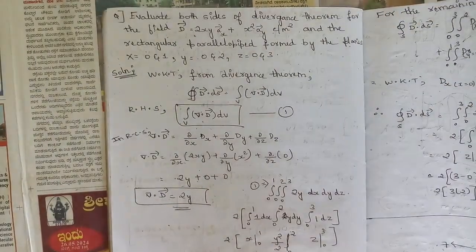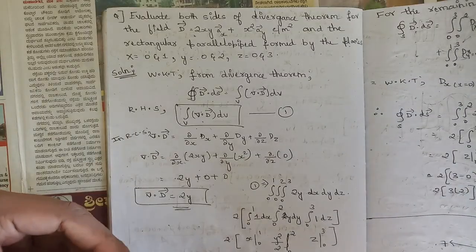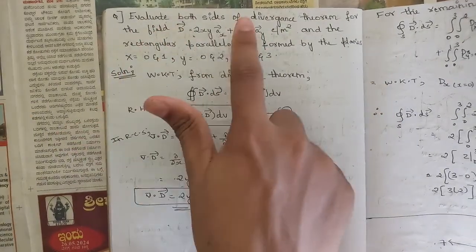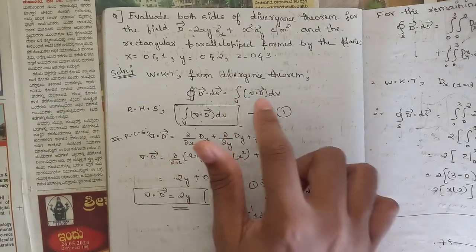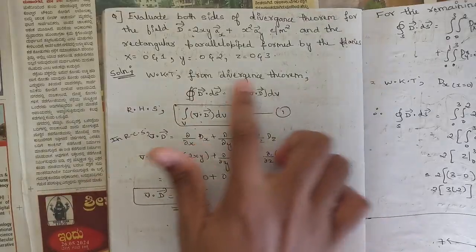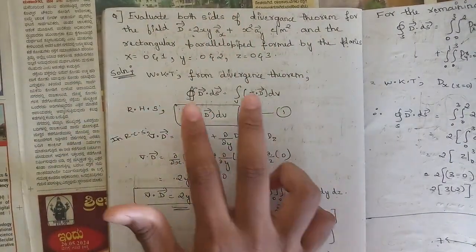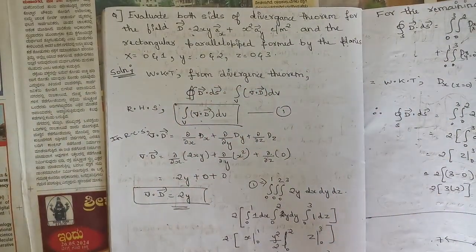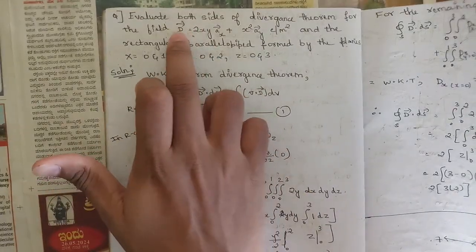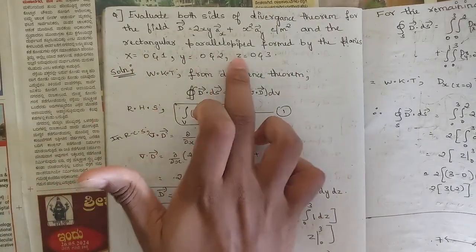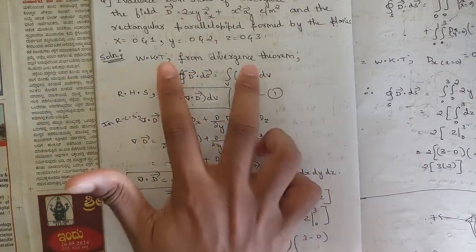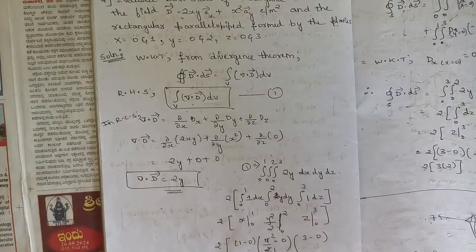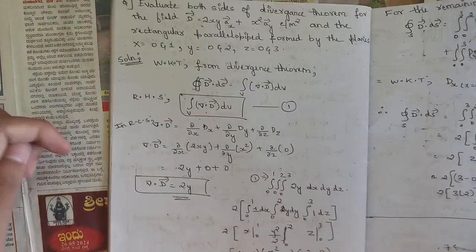Another important module 2 problem is to evaluate both sides of the divergence theorem. The equation is: surface integral of D·dS = volume integral of del·D dV. They might ask to evaluate both the left-hand side and right-hand side for seven to eight marks. They would give the value of electric flux density D and the limits of x, y, z. You need to find LHS and RHS and verify they are equal to satisfy the divergence theorem.